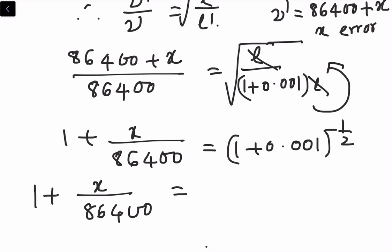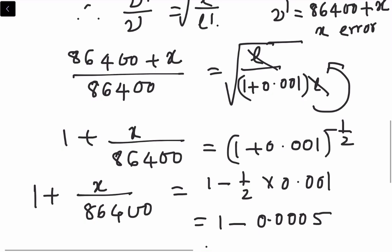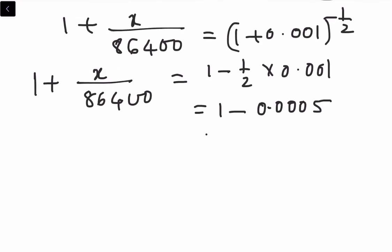That will be 1 minus 0.0005. Therefore x divided by 86,400 is equal to minus 0.0005. Both sides you can cancel this one - it can be cancelled on both sides.